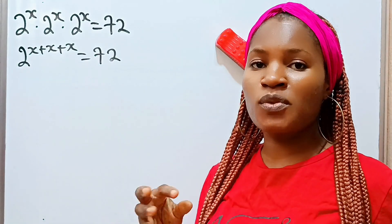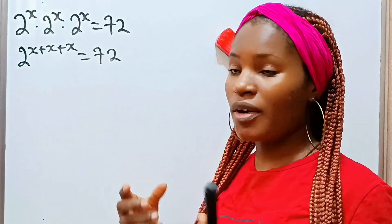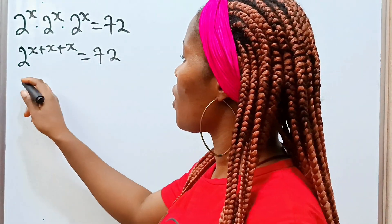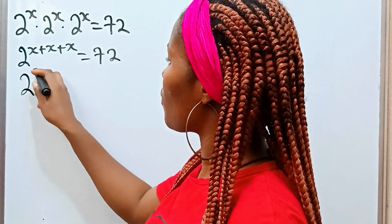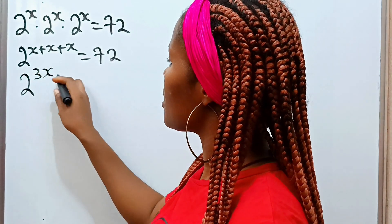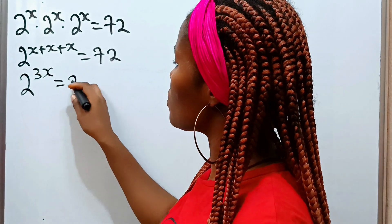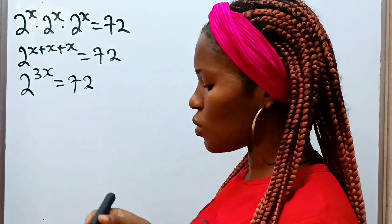Now x plus x plus x gives us 3x. So we have 2 to the power of 3x is equal to 72.